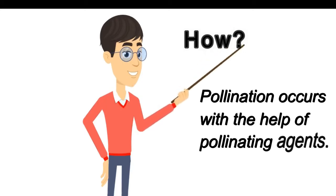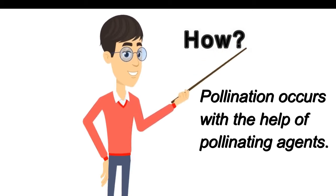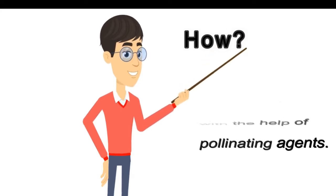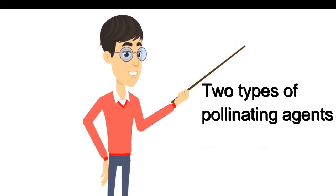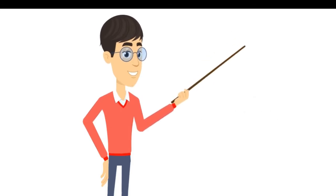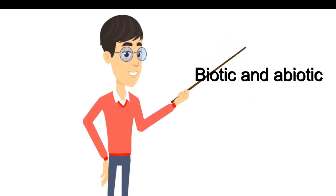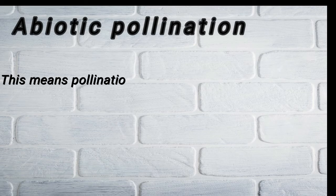So how does pollination occur with the help of pollinating agents? What are the types of pollinating agents? There are mainly two types: the first is the biotic component and the second is the abiotic component. Let's discuss one at a time.